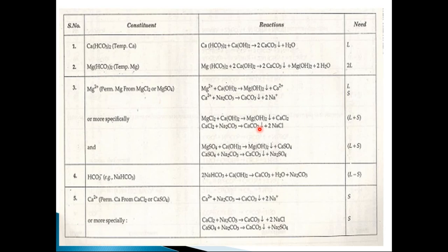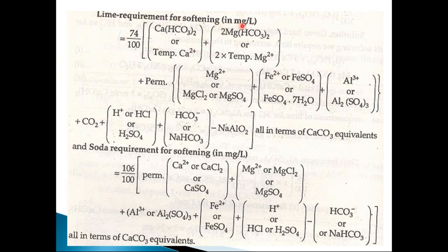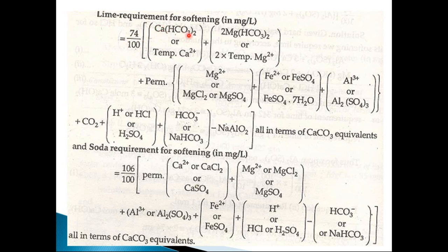Now comes the chemistry of the lime-soda process. The lime requirement formula for softening in milligrams per liter is: (74/100) × [temporary calcium hardness + 2 × temporary magnesium hardness + permanent magnesium hardness + free acidity + CO₂ + HCl + H₂SO₄ + iron + aluminum − sodium aluminate]. Here 74 is the molecular weight of calcium hydroxide (lime) and 100 is for calcium carbonate. In the formula, magnesium bicarbonate is multiplied by 2 but calcium bicarbonate is not — the answer comes from the chemical reactions.